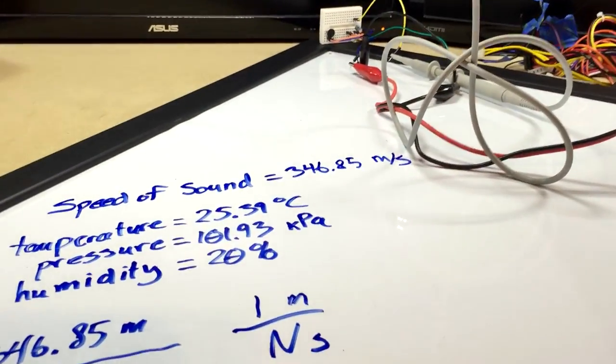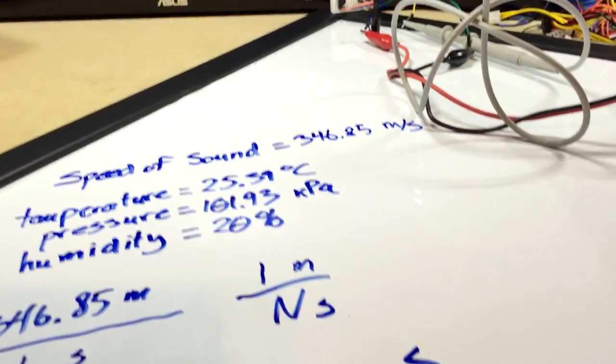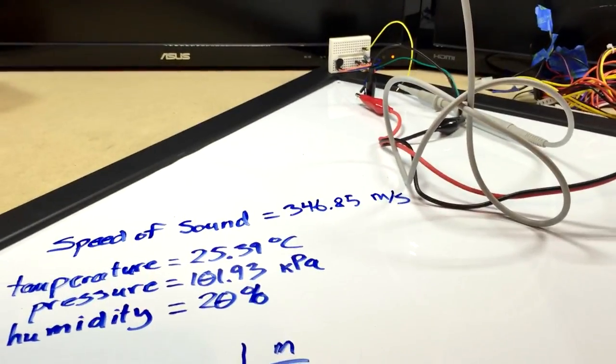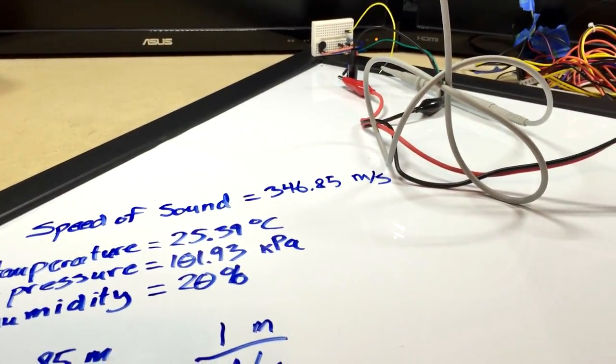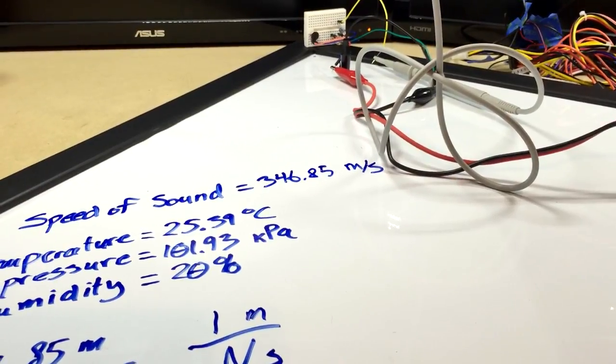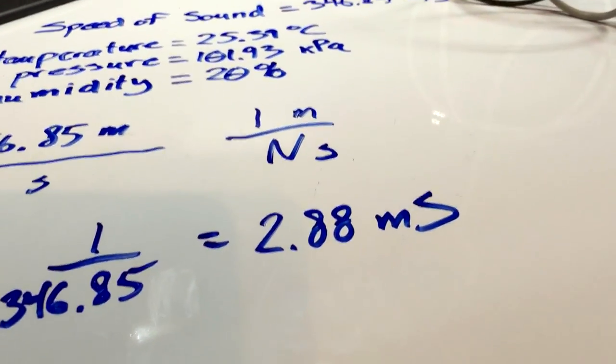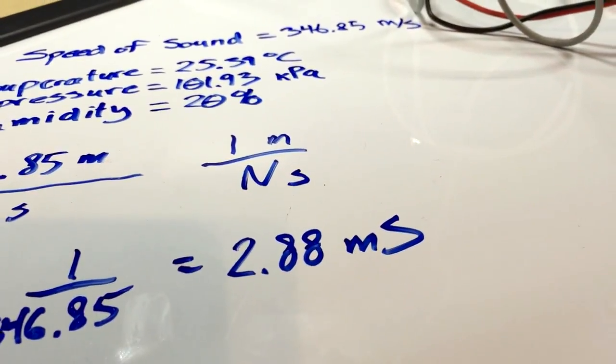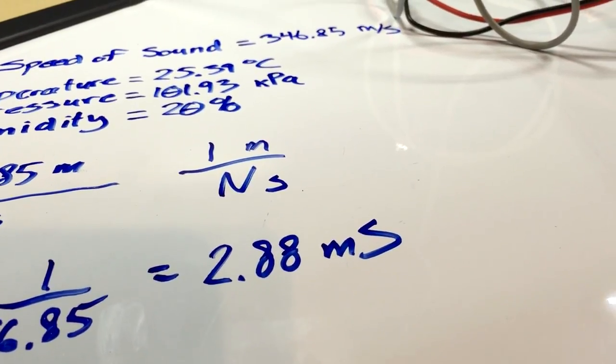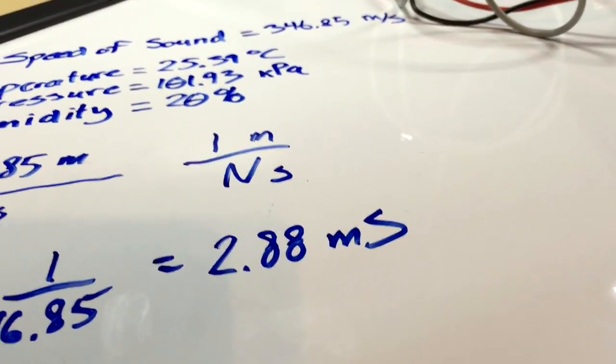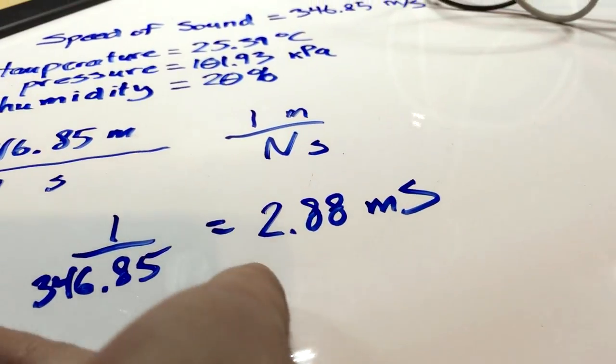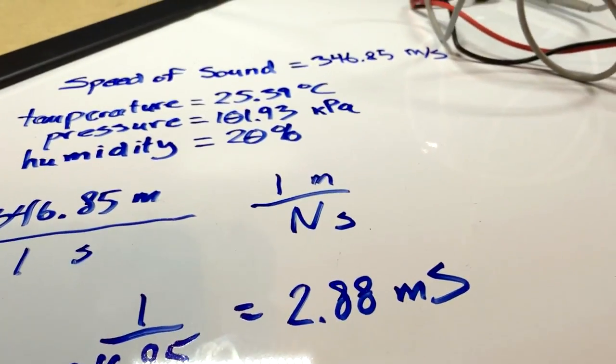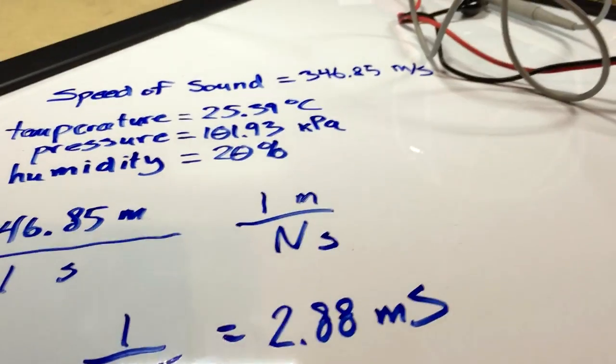Actually, the farther apart you do this, the more accurate the measurement will be because there's a lot more time in flight, so it's not going to be as bad. But you saw the first time, even with it being a meter across, I was able to get exactly 2.88, which according to my math is what it should be in this room with its current air pressure, temperature, and relative humidity.